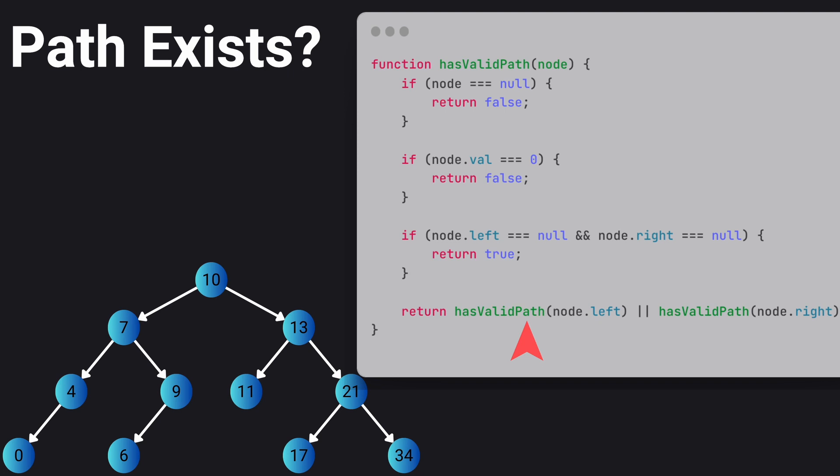So we first check if there is a valid path in the left side of our tree. If it's not, then we check our right side of the tree. If we don't find any answer, we return false. Otherwise if we found a valid path, we return it upwards and we return true at the end.